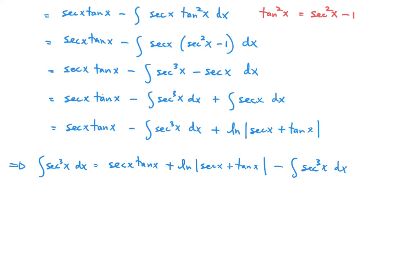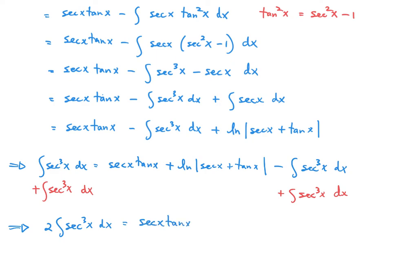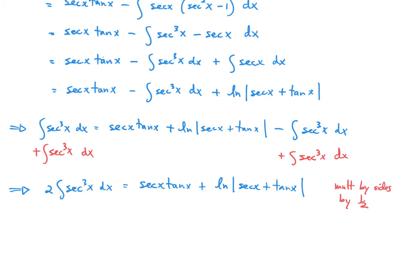So I'm going to add the integral of secant cubed x dx to both sides. When I do that, I'll have two of them on the left-hand side, and the right-hand side will be secant x tangent x plus the natural log of the absolute value of secant x plus tangent x. To solve, I just need to multiply both sides by one half, which isolates the integral of secant cubed x.